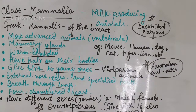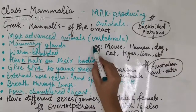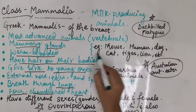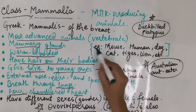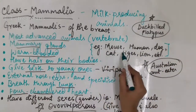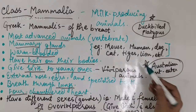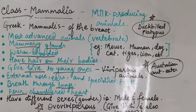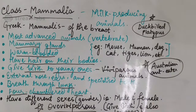Class Mammalia examples: mouse, human, dog, cat, tiger, lion, etc. All those who give birth to young ones are called mammals and the class is Mammalia.